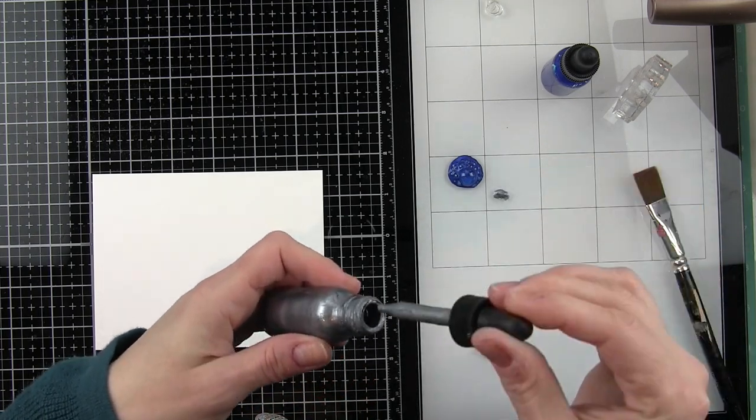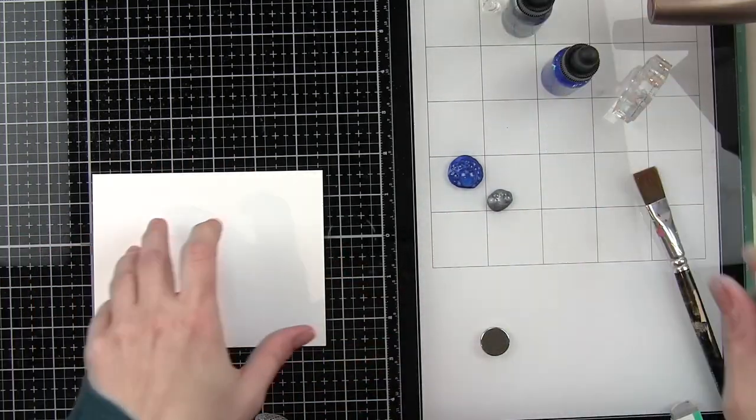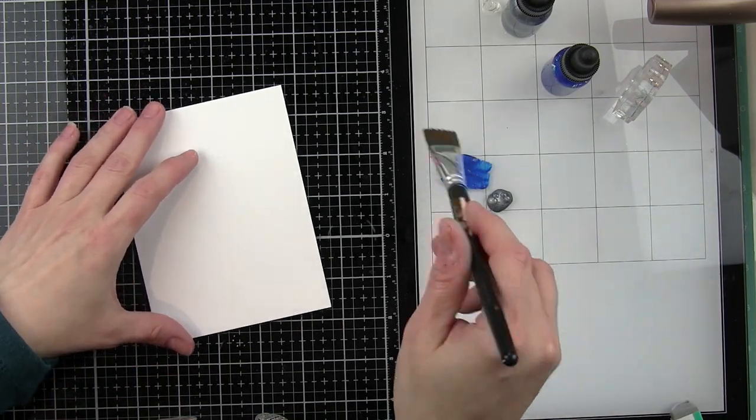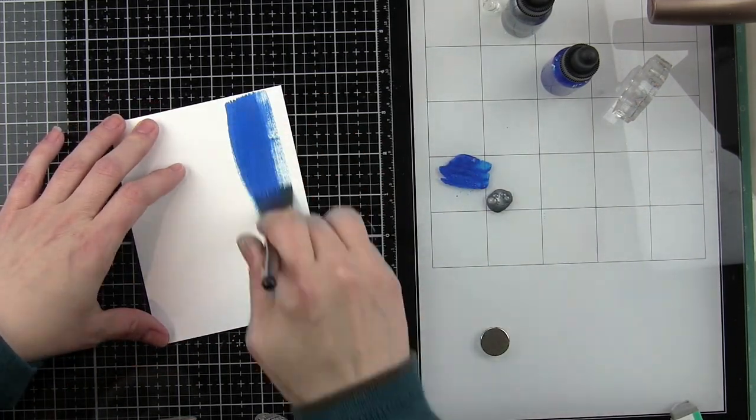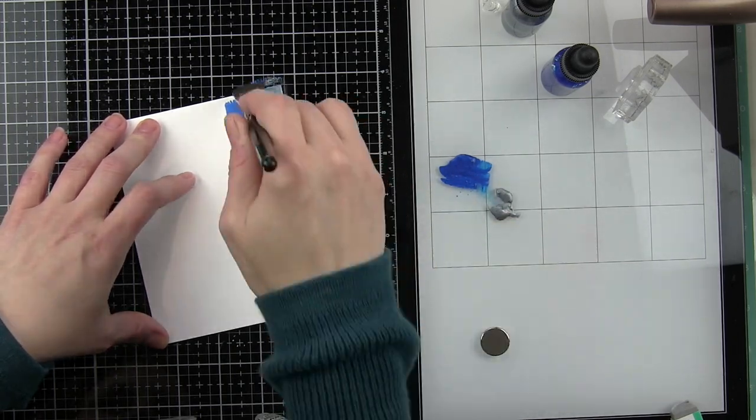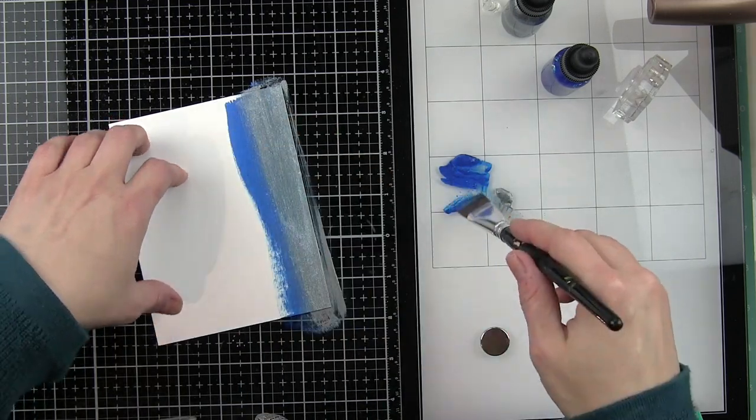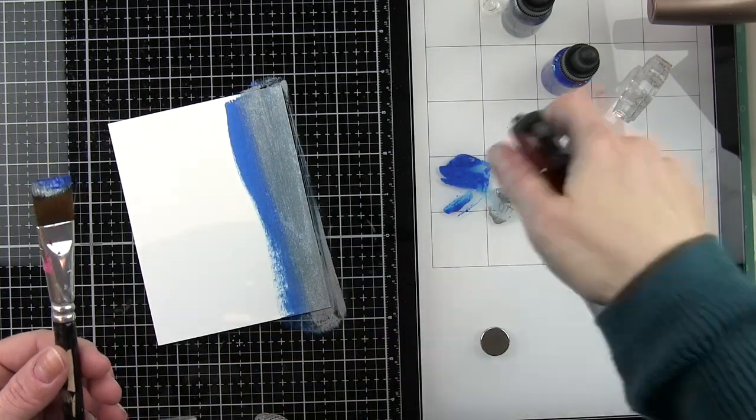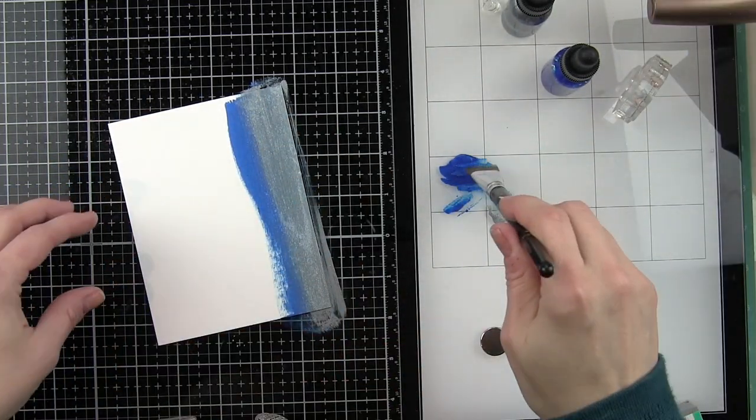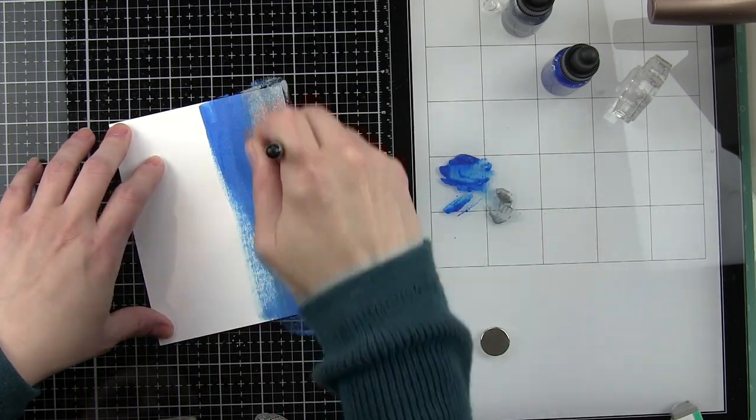We're going to start with a four and a quarter by five and a half inch piece of smooth white cardstock. On my glass mat work surface I am putting out some blue glimmer metallic ink and also some of the pewter glimmer metallic ink. These are both from Hero Arts. I'm adding a little water to these to water them down so that they spread and blend a little bit better.